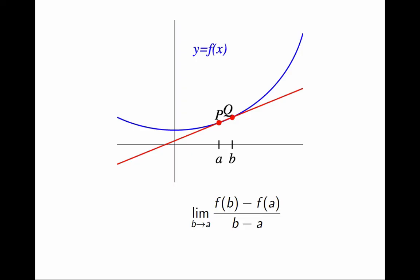And in that limit, the red line becomes the line tangent at P. So, the slope of the red line becomes the slope of the tangent line, which is the derivative of f at a.